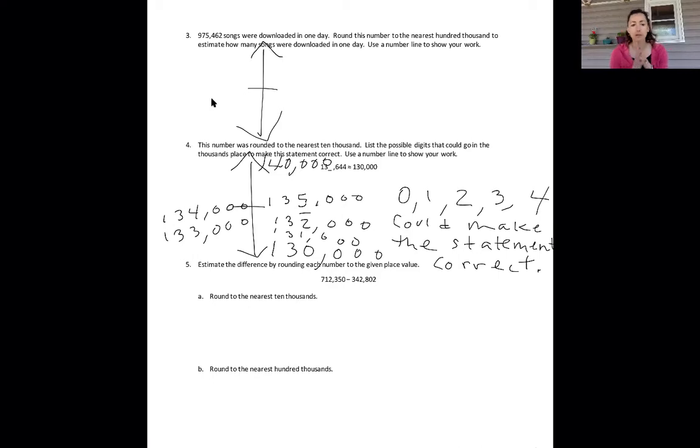All right, and I finally wanted to look at the bottom one. Number five says estimate the difference by rounding each number to the given place value. We're looking at a subtraction sentence here, so we have to round those numbers. For part a, to the nearest ten thousands. So we're going to say, is that one going to stay the same, or is it going to move up and become a bigger ten thousand?